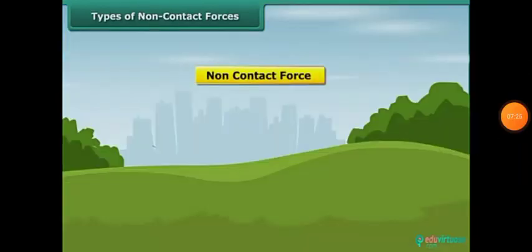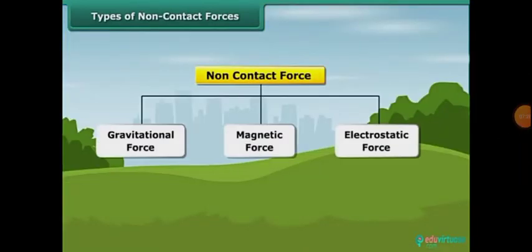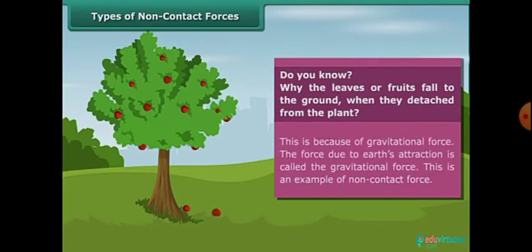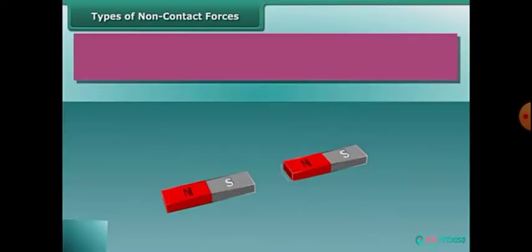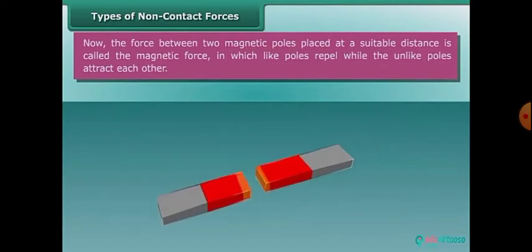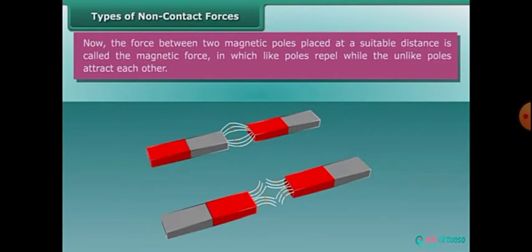Types of non-contact forces: gravitational force, magnetic force, and electrostatic force. Do you know why leaves or fruits fall to the ground when they detach from a plant? This is because of gravitational force — the force due to Earth's attraction. This is an example of non-contact force. The force between two magnetic poles placed at a suitable distance is called magnetic force, in which like poles repel while unlike poles attract each other.